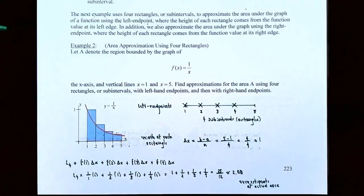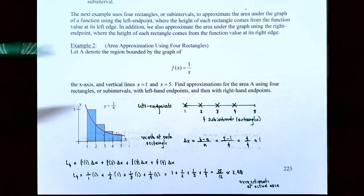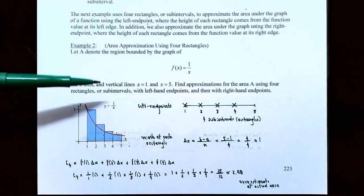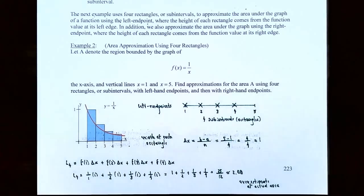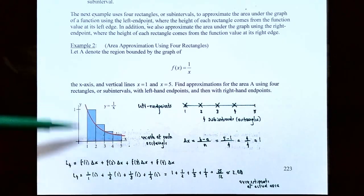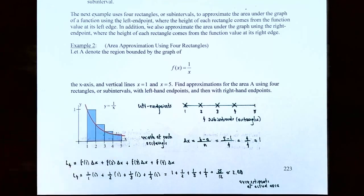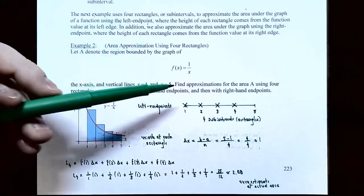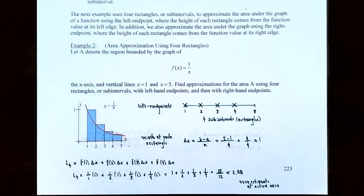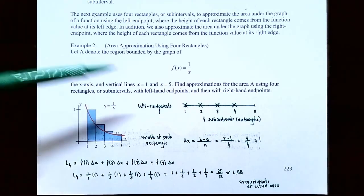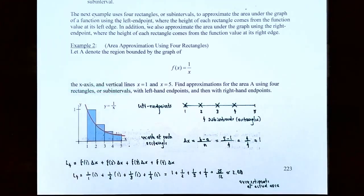Example 2 — area approximation using 4 rectangles. Let capital A denote the region bounded by the graph of f of x equals 1 divided by x, the x-axis, and the vertical lines x equals 1 and x equals 5. We want to find an approximation for the area underneath the graph of y equals 1 divided by x, above the x-axis, from x equals 1 to x equals 5 using 4 rectangles. Find approximations for the area A using 4 rectangles with left-hand endpoints and then also right-hand endpoints.